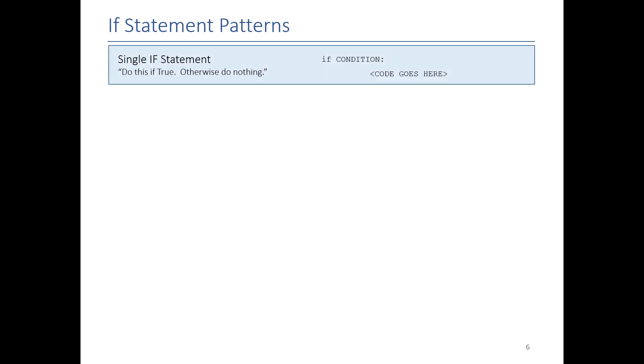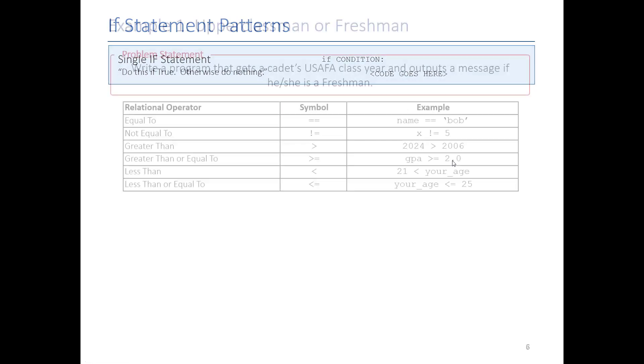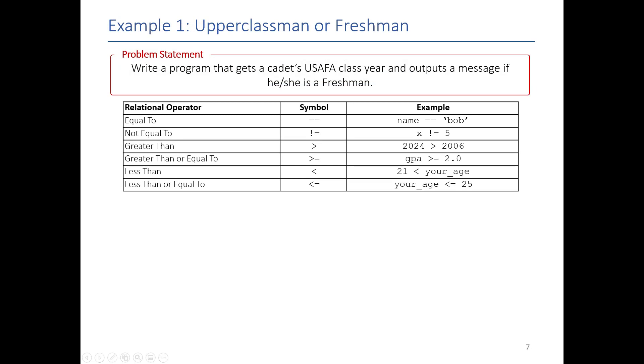There are basically four different patterns when it comes to using if, else, and else-if statements. The first one is your standard if statement with nothing else. In English, all that's really happening is: do this if it's true, otherwise do nothing. So if this condition is true, execute this code — otherwise this code never executes and nothing happens in your program. Here's an example of a program that needs to do that.